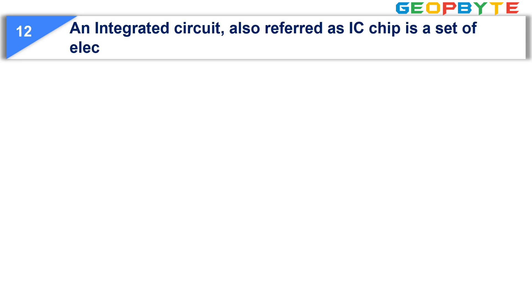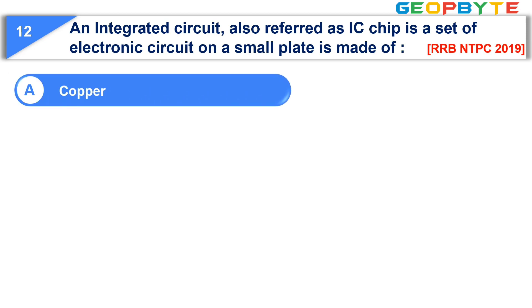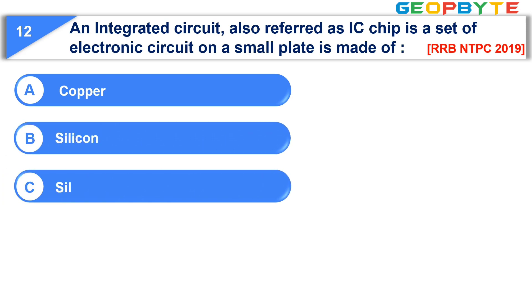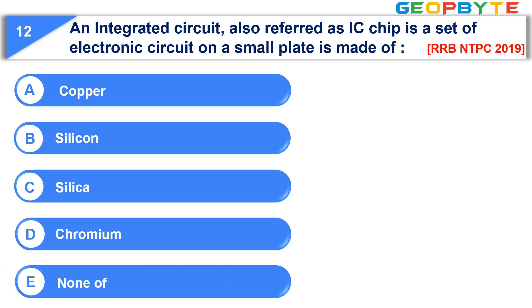Question number twelve: An integrated circuit, also referred to as IC chip, is a set of electronic circuits on a small plate made of — option A: copper; option B: silicon; option C: silica; option D: chromonium; option E: none of these. The correct answer is option B: silicon.